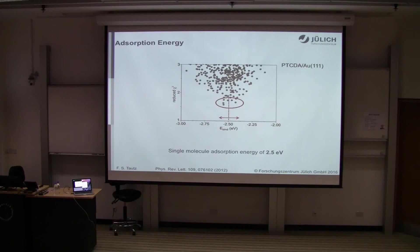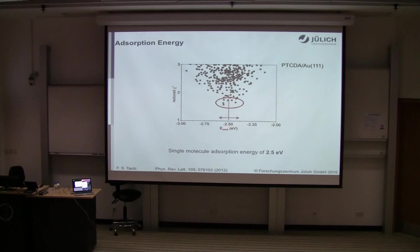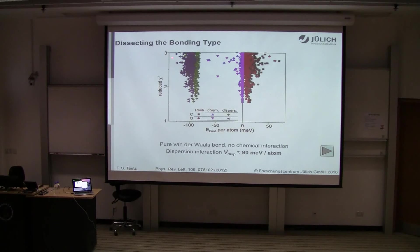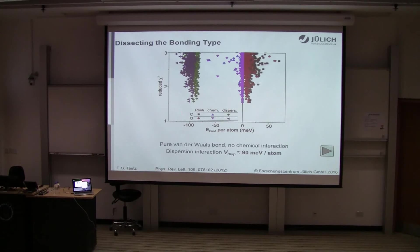One thing we can do directly is determine the absorption energy of the molecule: we place the molecule in its adsorbed position on the surface without the tip, and find that the potentials giving the best agreement correspond to a binding energy of about 2.5 eV, in reasonable agreement with theoretical expectation. More importantly, we can also partition this energy between different types of interactions — for example, Pauli repulsion, which turns out to be zero, and the dispersive interaction, which is about 80–90 meV per atom in this case.